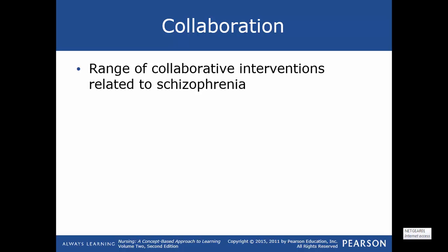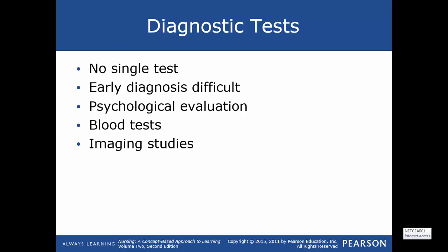There is a wide range of collaborative interventions available for schizophrenia. For diagnostic tests, there is not really a single test used — diagnosis is usually based on symptoms exhibited. Early diagnosis is very difficult due to symptoms being vague at first and because many other conditions share the same symptoms, including bipolar disorder, depression, brain tumors, medication reactions, or illicit drug and alcohol use. A thorough psychological evaluation is needed, and blood tests and imaging studies are also done to rule out tumors or other causes.